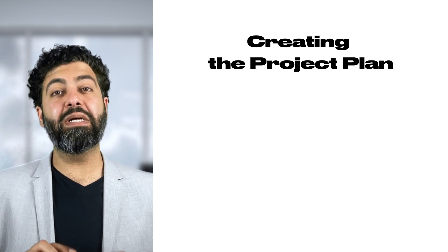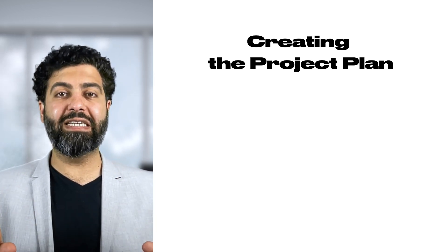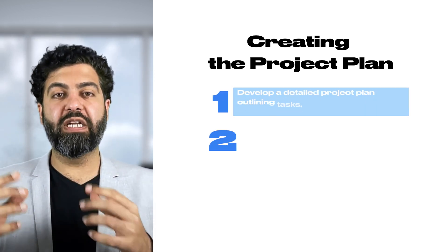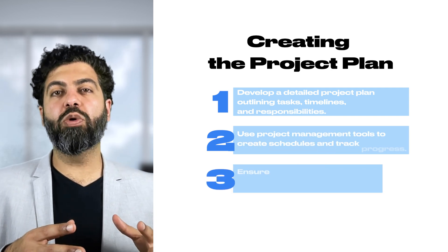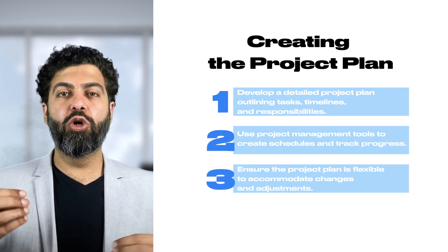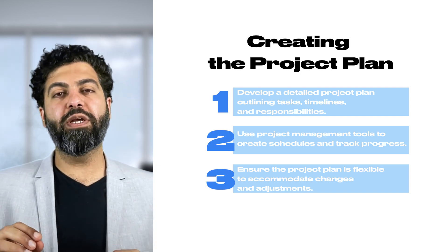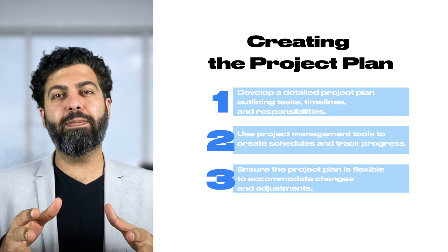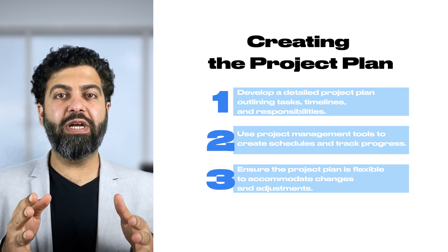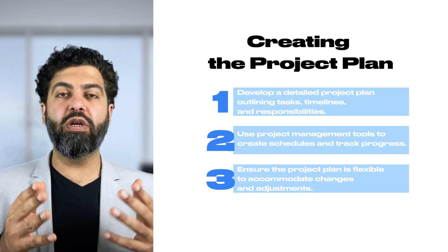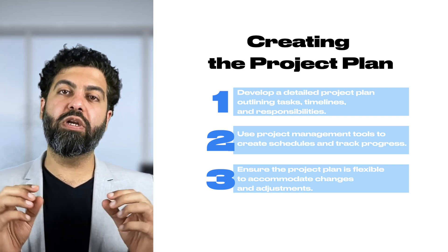Once you've done the feasibility check, risk assessment, and talked to your stakeholders, you need to create your project plan. A project plan is a detailed outline of activities and tasks that you're going to do during project execution. You can use a project management tool to develop and document your project plan. Make sure that the project plan has some flexibility built into it so that you can accommodate changes or unexpected instances that could arise.